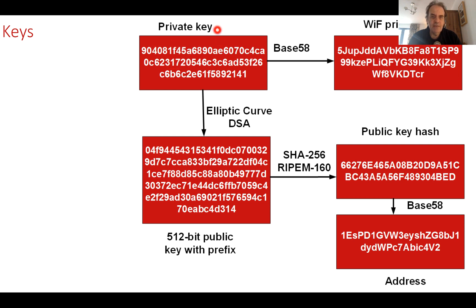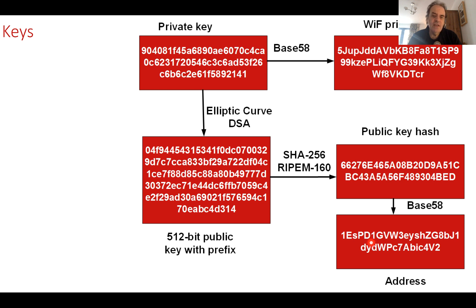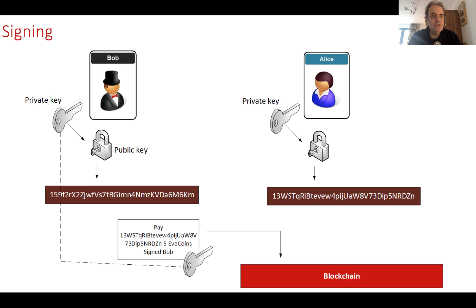The private key should never be given away. It is stored in a format called WIF (Wallet Import Format), which is base 58 with certain characters missing from normal base 64. From the private key we use elliptic curve DSA methods to create a 512-bit public key, then hash it to produce the address. The address is the identifier the user is known by — if someone sends bitcoins they use this address.